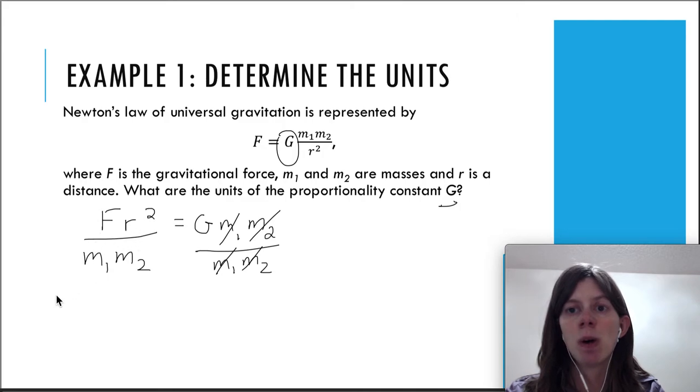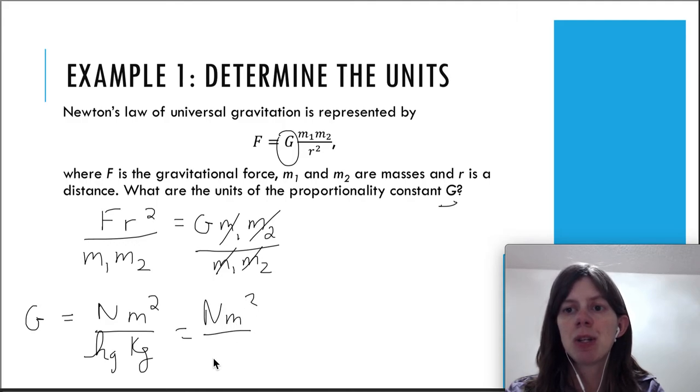Now all I need to do is plug in the units that I know for all of these quantities here. The units are going to be equal to F which is newtons, r is a distance has meters but you square it so meters squared, and the two masses have kilograms each. So we're going to simplify this to newtons times meters squared divided by kilograms squared. I really like this example because sometimes you're going to forget what the units are for a certain quantity, so it's always a good trick to find an equation and plug in all the other units that you know.